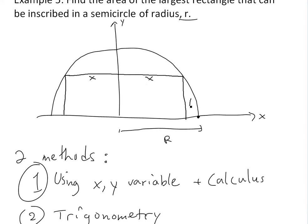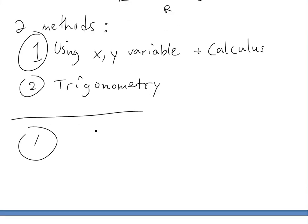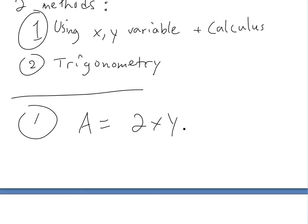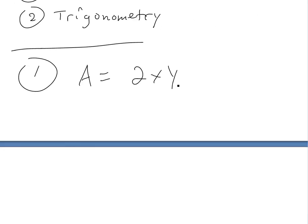This height is going to be y, and at this corner point we have coordinates (x, y). From this point, the radius is always r. So the area is just going to be A = 2x times y, because it's length times height — 2x is the length and y is the height. Now we want to get y in terms of x.